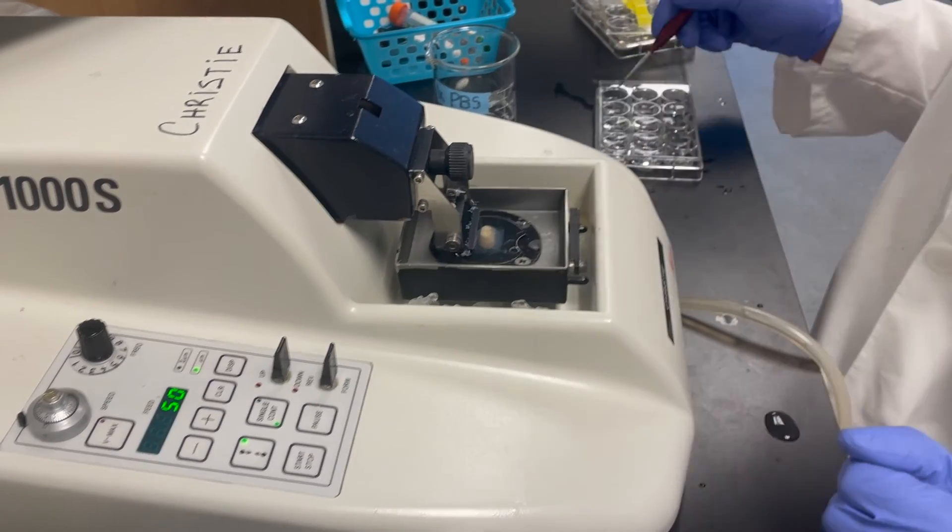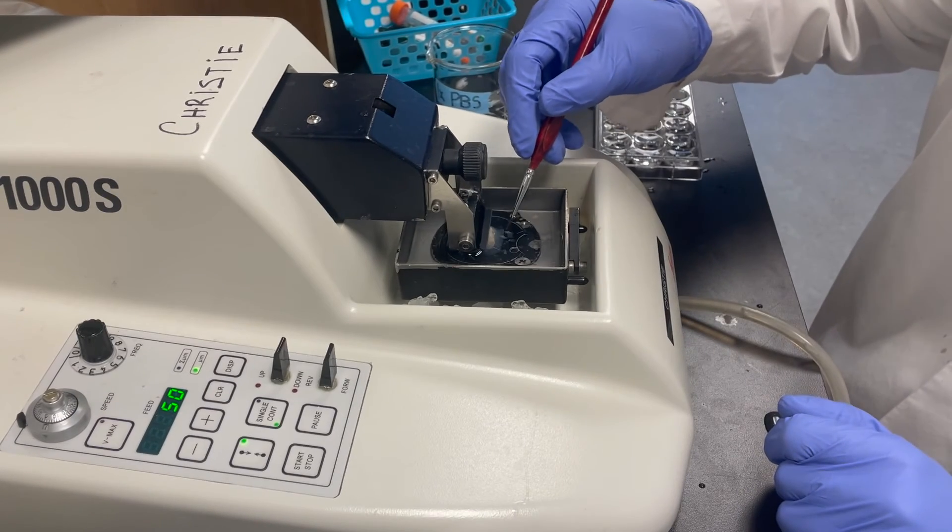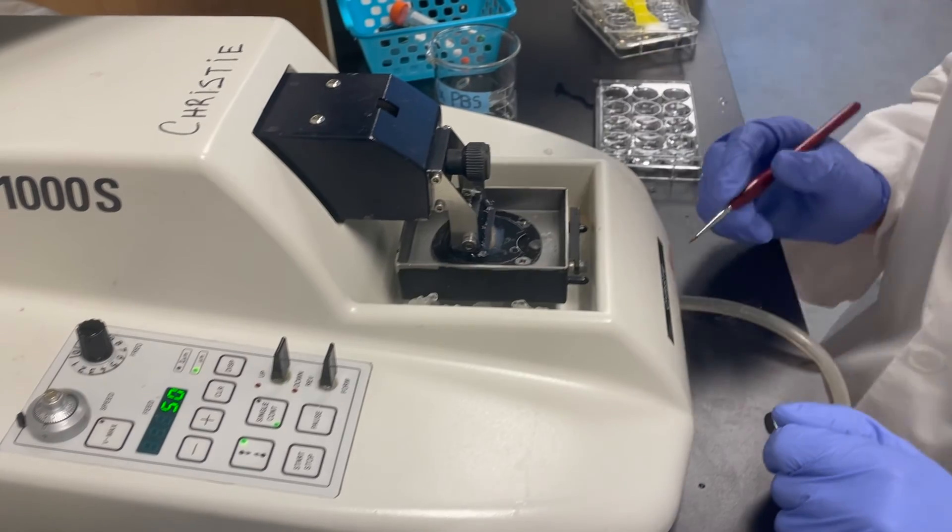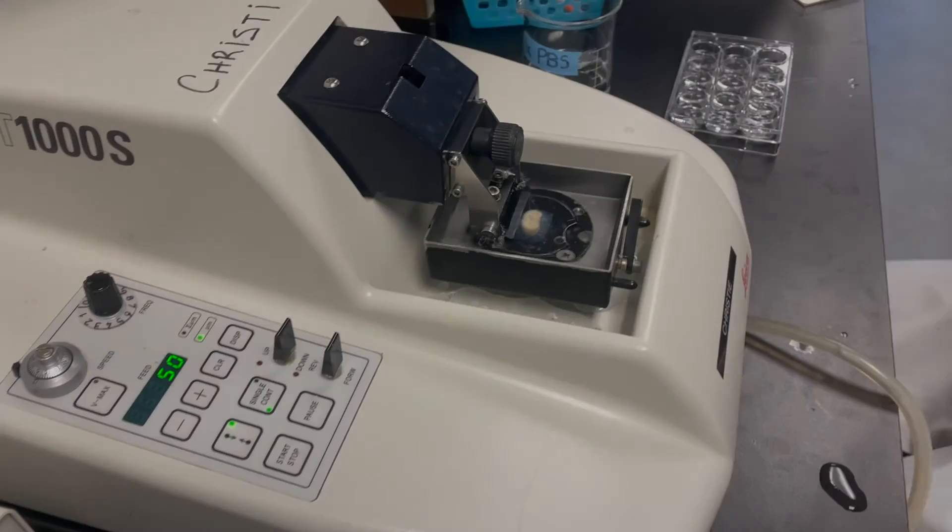To clarify, this is where we transfer slices one at a time in order from well 1, to well 2, to well 3, all the way until well 12, and then start over again. This way, each well contains an equal number of representative samples from throughout the brain.